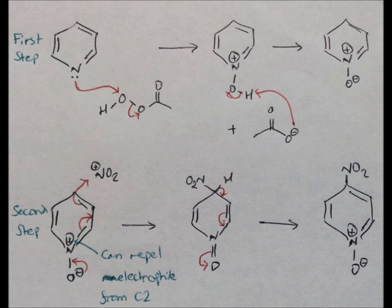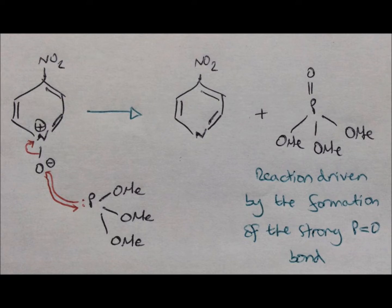We now need to reduce the N oxide back to pyridine. How we do this is shown in this diagram here. This reaction is driven by the formation of the strong P=O bond.